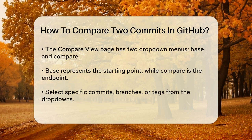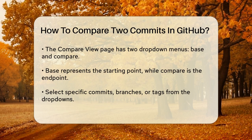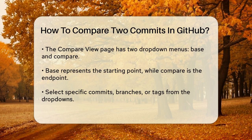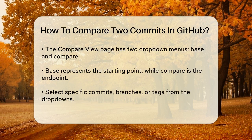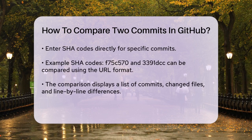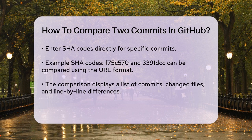If you're comparing two specific commits, you can enter their SHA codes directly into these fields. For instance, if you want to compare two commits with SHA codes F75C570 and 3391DCC, you would use the URL github.com/your-username/your-repository/compare/F75C570...3391DCC. This will show you a detailed view of all the changes made between these two commits.